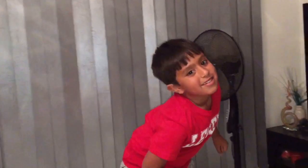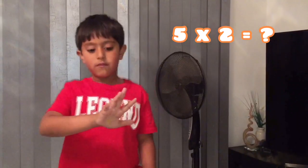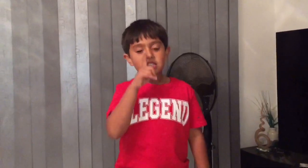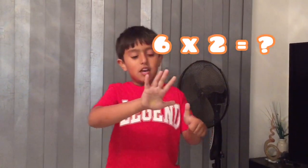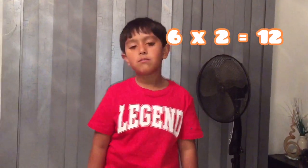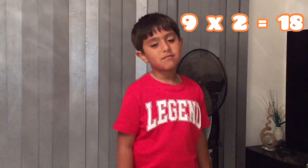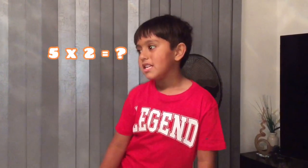It's all about 2's. 5 times 2: 2, 4, 6, 8, 10. Very good. 6 times 2? 6 times 2 is easy — 12. Very good. And 9 times 2? 18. Very nice. Ok, easy for you. 5 times 2? 5 times 2 is 10.